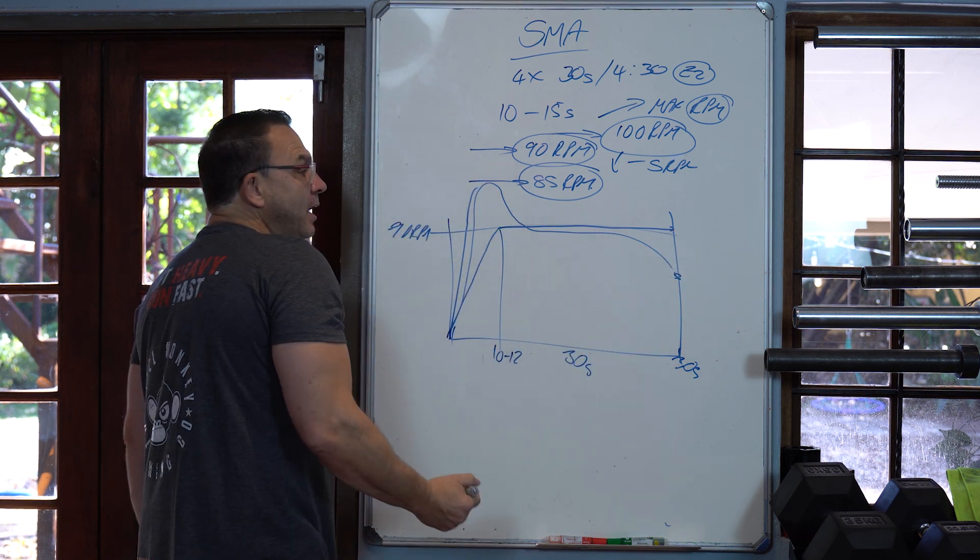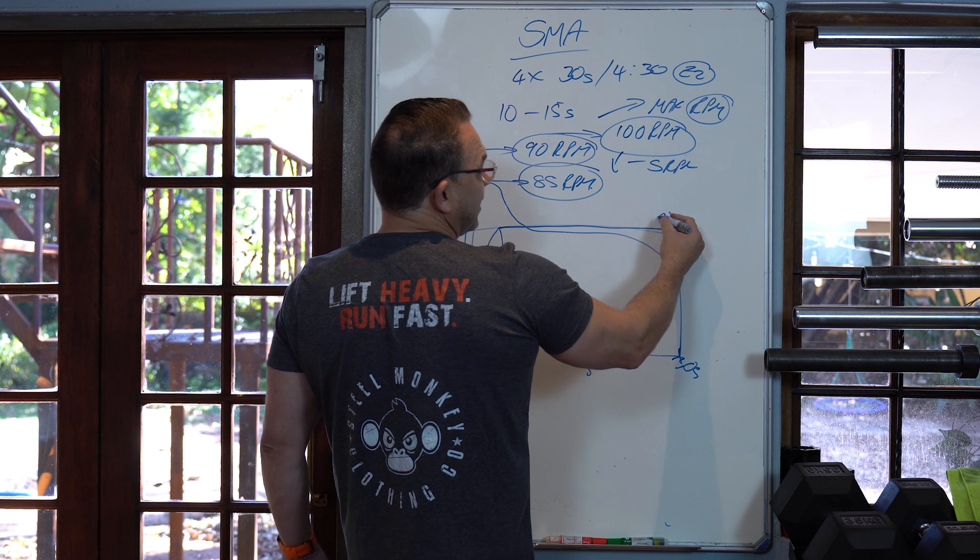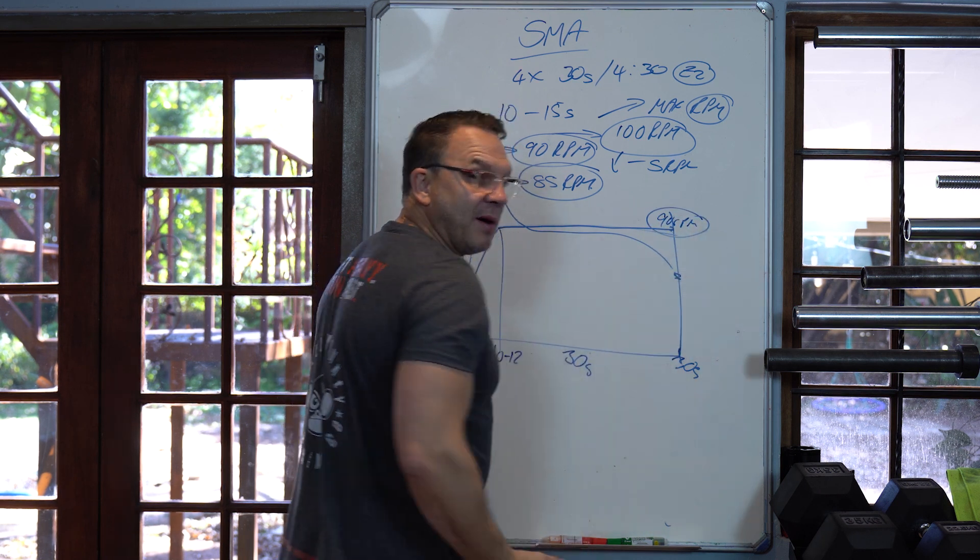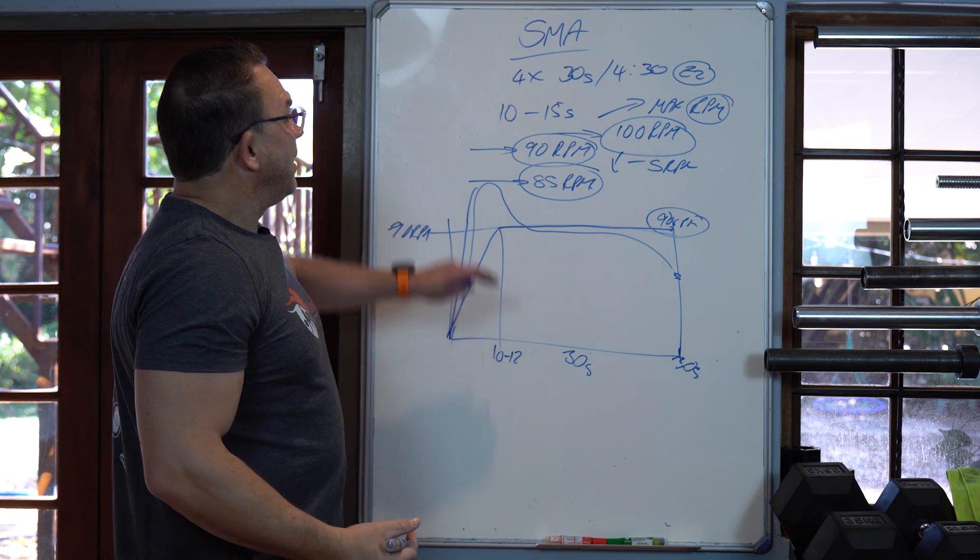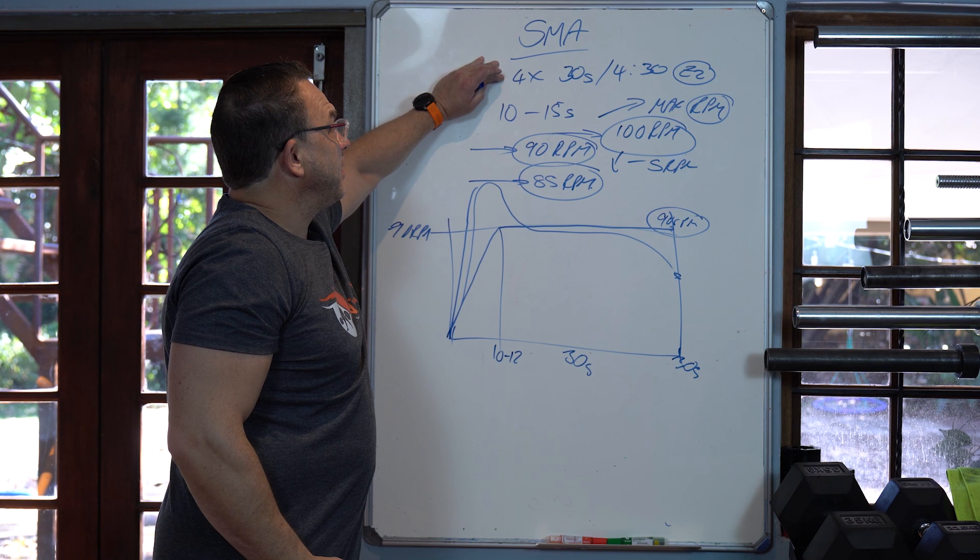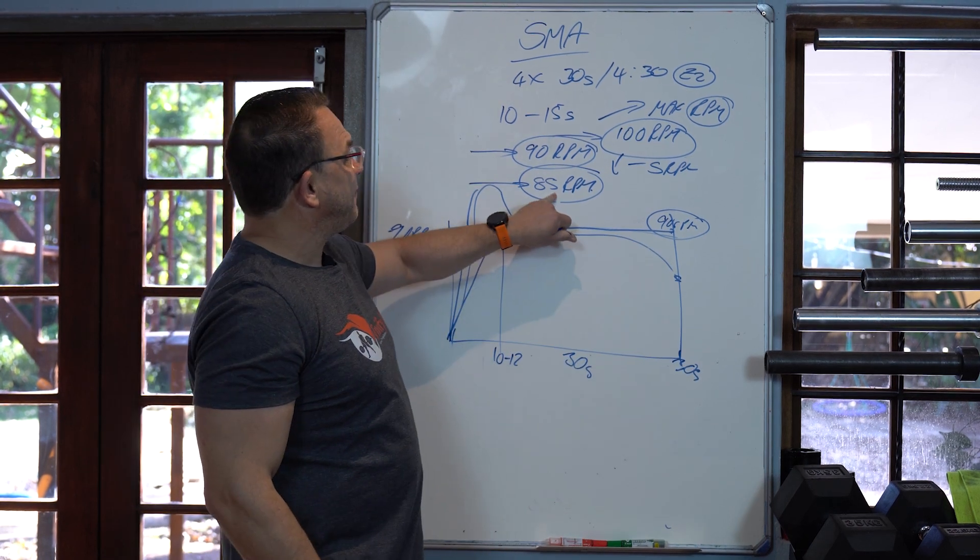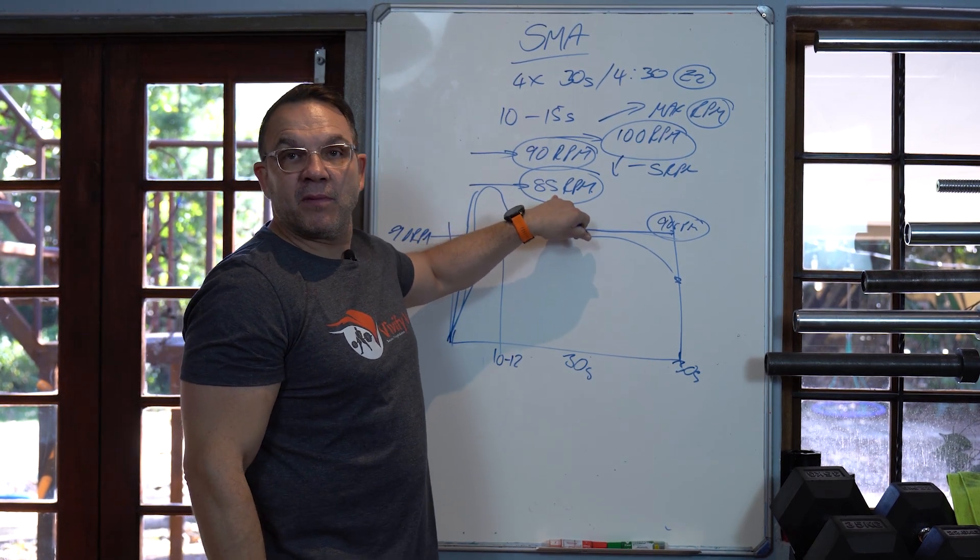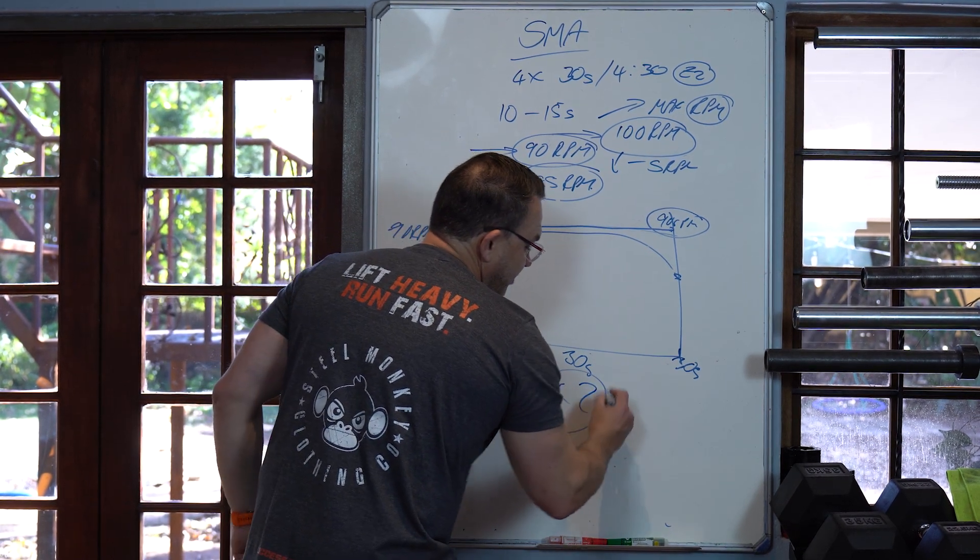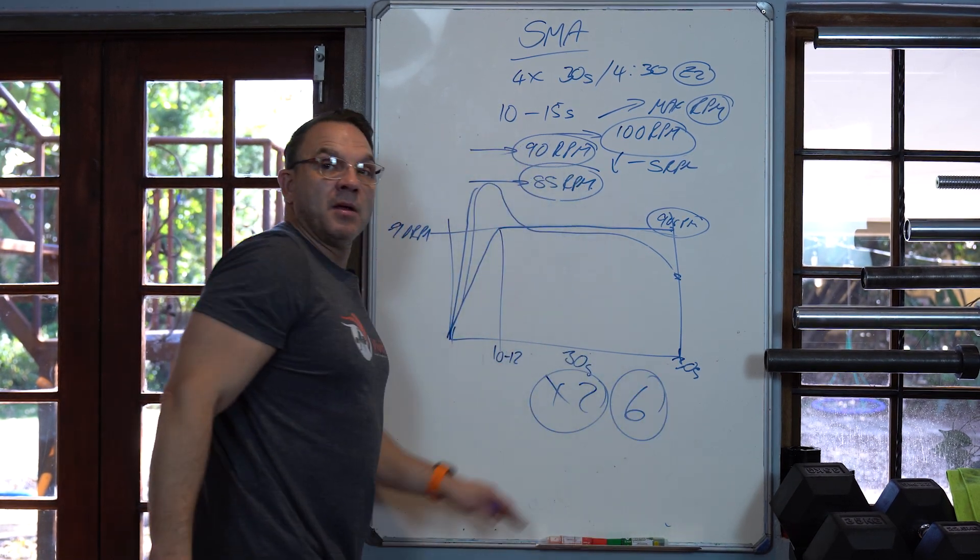If you find you can hold the 90 RPM comfortably, you're allowed to go up one or two RPMs. But the idea is to make four rounds. If you can keep four rounds and your RPM doesn't fall below the 85 RPM, then you buy yourself another two rounds. You can do six rounds, but only then.